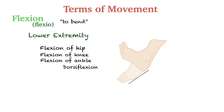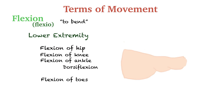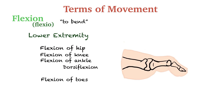The sole of the foot is called plantar and the front part is called dorsal. The flexion movement towards the sole of the foot is known as plantar flexion, and the front part flexion is called dorsiflexion of the ankle. Flexion of the toes is towards the sole of the foot.